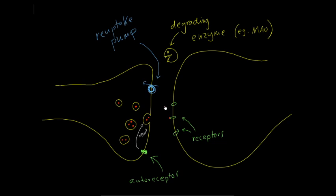But some of them instead of doing that will be taken up by pumps and then recycled back into the cell again, or they might attach to autoreceptors and activate inhibition of further release of neurotransmitter, or alternatively they might get chewed up by degrading enzymes.